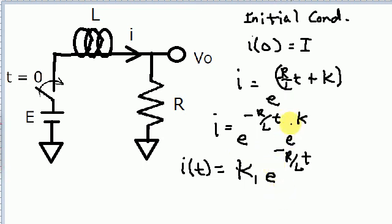So now we need to figure out what the K1 term represents, and so we have to use our initial condition of I of zero equals big I. So I of zero equals big I, which equals K1 times E to the zero, which is going to be 1. Therefore we can say that K1 is equal to big I.